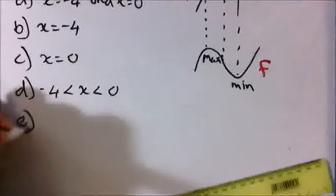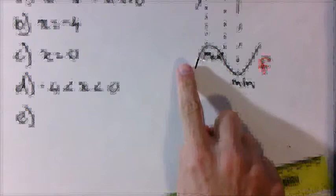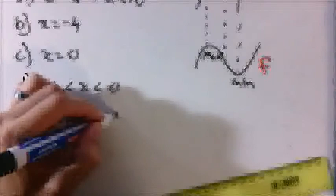Part E: x for which the graph is increasing — that means to the left of -4 and to the right of 0. So the answer is x < -4 or x > 0.